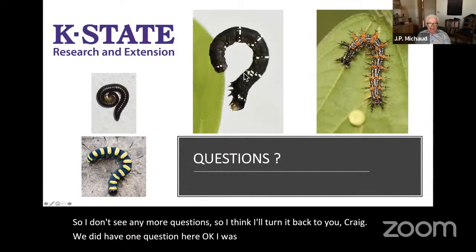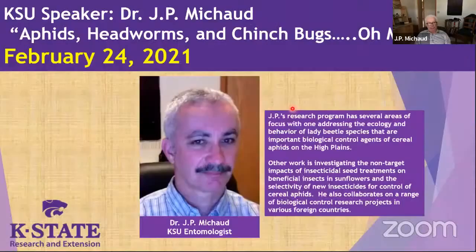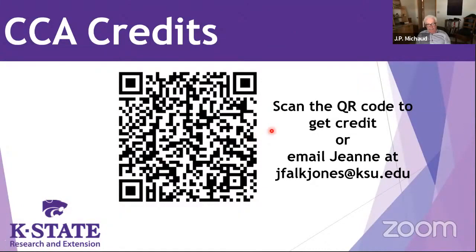Question from Keith in the Northwest on false chinch bugs versus true chinch bugs — are they a threat? Generally no, because false chinch bugs, although they can come off weeds like mustards in large numbers, don't do the same kind of damage to the plant. There is a threshold for false chinch bugs on ripening sorghum heads — something like 200 and something per plant. They're not nearly as big a concern because they don't have the toxic saliva and don't really harm the plant, so it takes a lot more of them. They will feed on grain at the milk stage, but it takes sufficient numbers to cause damage.